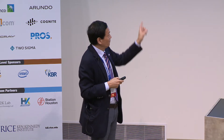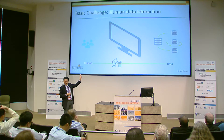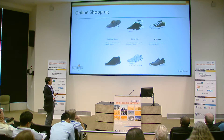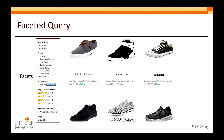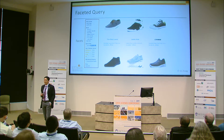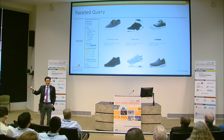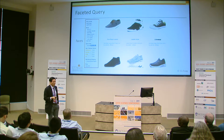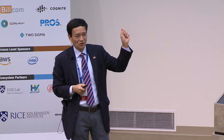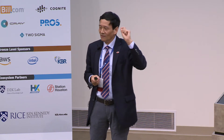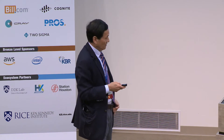This bottleneck has been addressed very well in consumer settings like Amazon — that's how you can shop online without much effort, finding the right shoes. There are facets already built into the interface: size, color, price range, make. This facet is what we call a semantic handle — it allows you to link conceptual attributes to real-world entities. If we want to address the interface problem for patient data using a similar approach, we need to apply this faceted search concept.